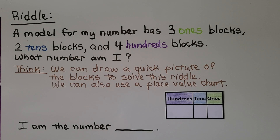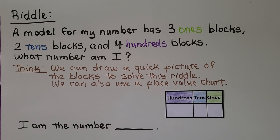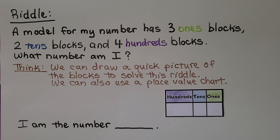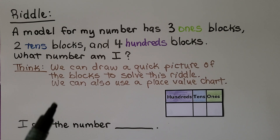Here we have a riddle. It says: a model for my number has three ones blocks, two tens blocks, and four hundreds blocks — what number am I? We think we can draw a quick picture of the blocks to solve this riddle, or use a place value chart.